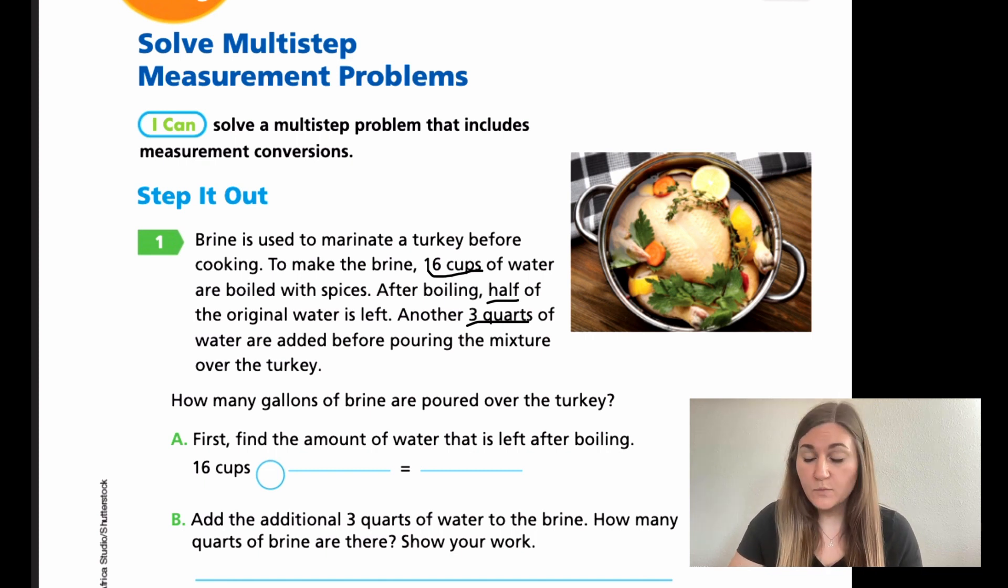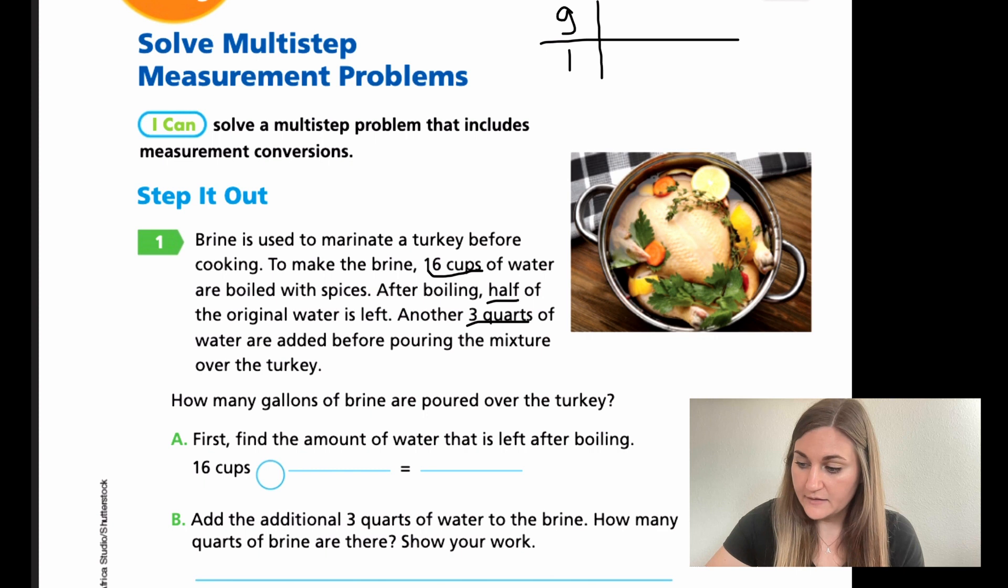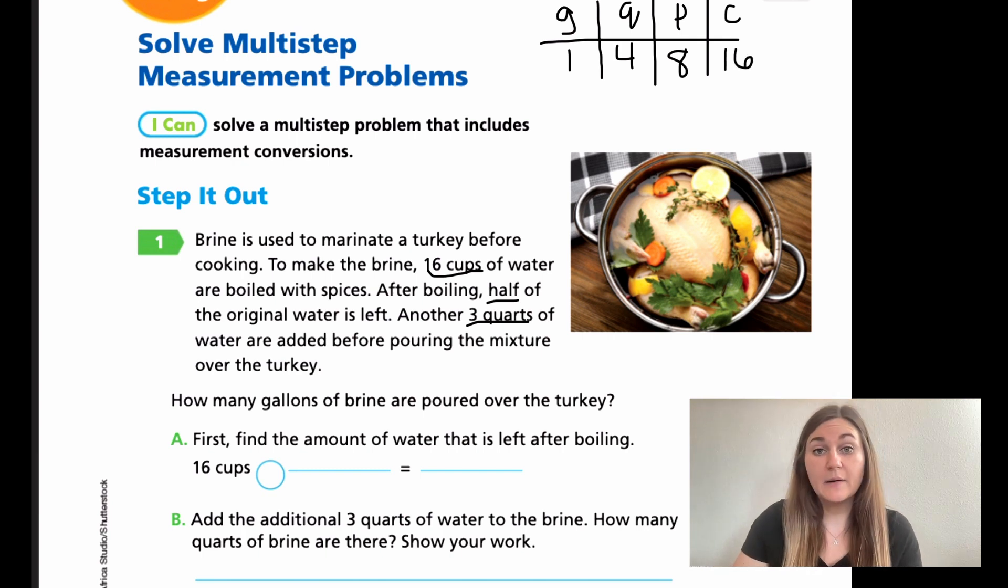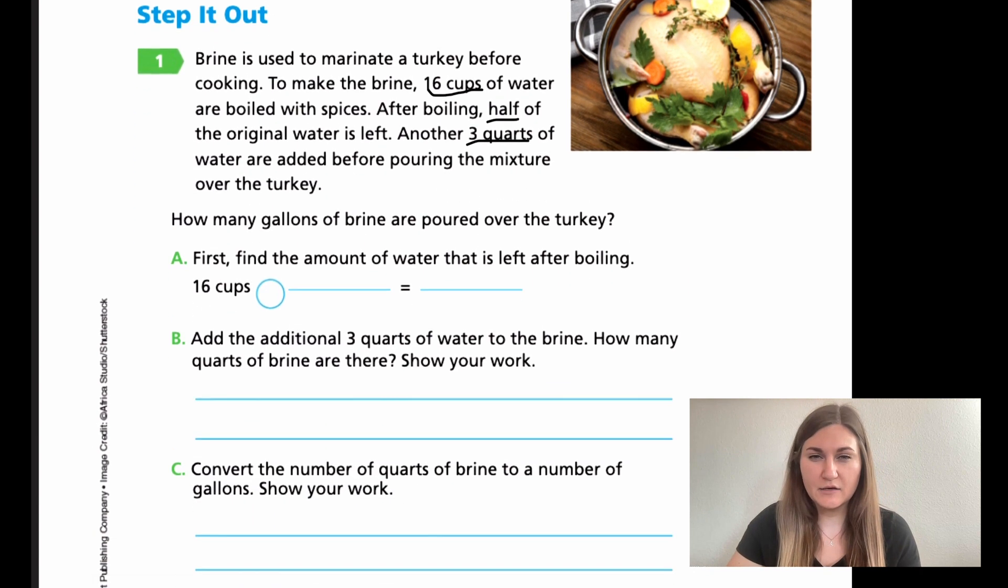So before I even move into A, what I'm going to do is I'm going to go ahead and make myself a little cheat sheet up top. And you can totally do the same any time that you have any types of conversions. So I'm going to use what I used last lesson and I'm going to just write the letters. So gallon. And if I have one gallon, that means for quarts, I'm going to have four. And that means for pints, I'm going to have eight. And then for cups, I'm going to have 16. So now I can go ahead and do this page just using that little cheat sheet up top.